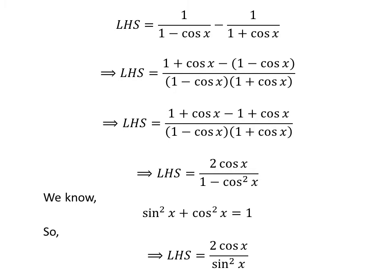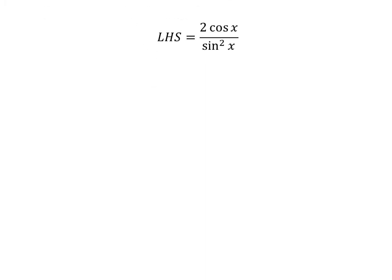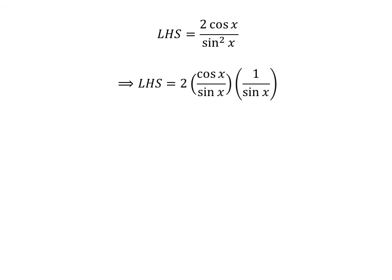Thus, the left hand side of the identity is equal to 2 times cosine of x upon square of sine of x. We can rewrite this as 2 times cosine of x upon sine of x, times 1 upon sine of x.